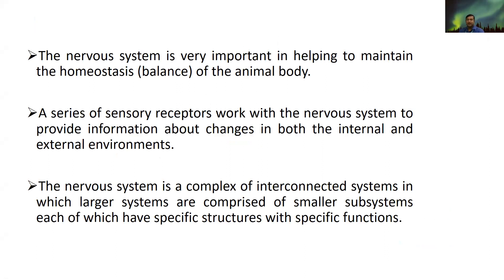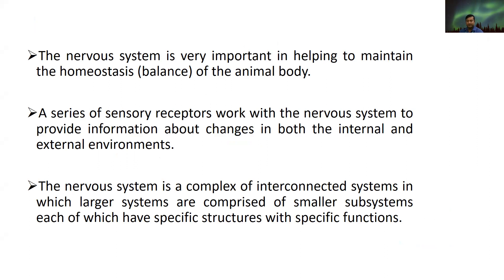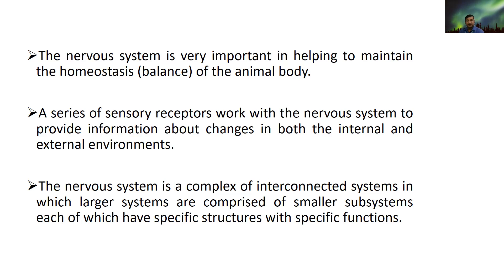People know that the nervous system is very important. The system basically helps to maintain homeostasis — the balance of the animal body. A series of sensory receptors work with this nervous system. This nervous system is a complex of interconnected systems, in which larger systems are comprised of smaller subsystems, each with a specific function for each specific structure.